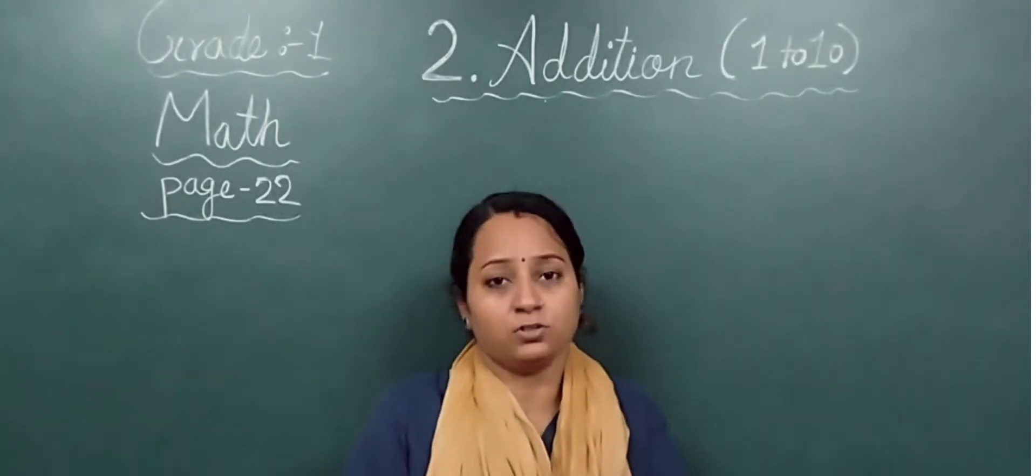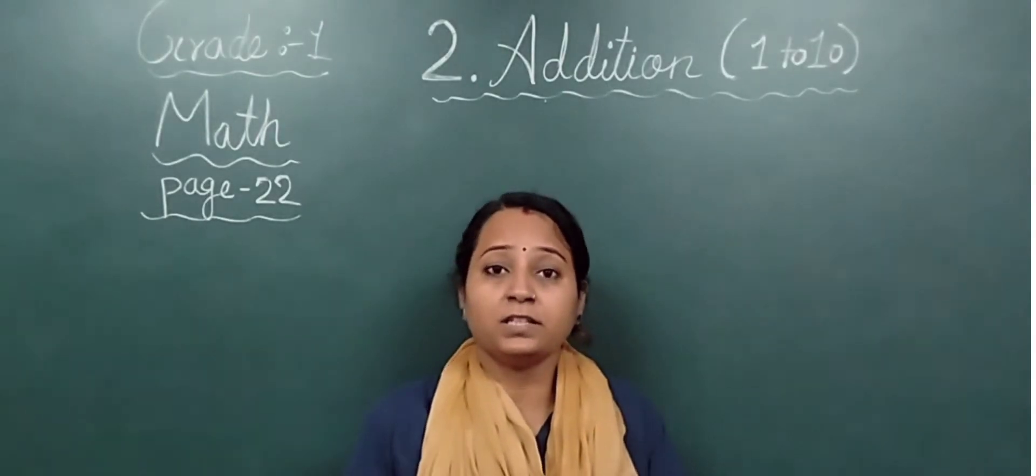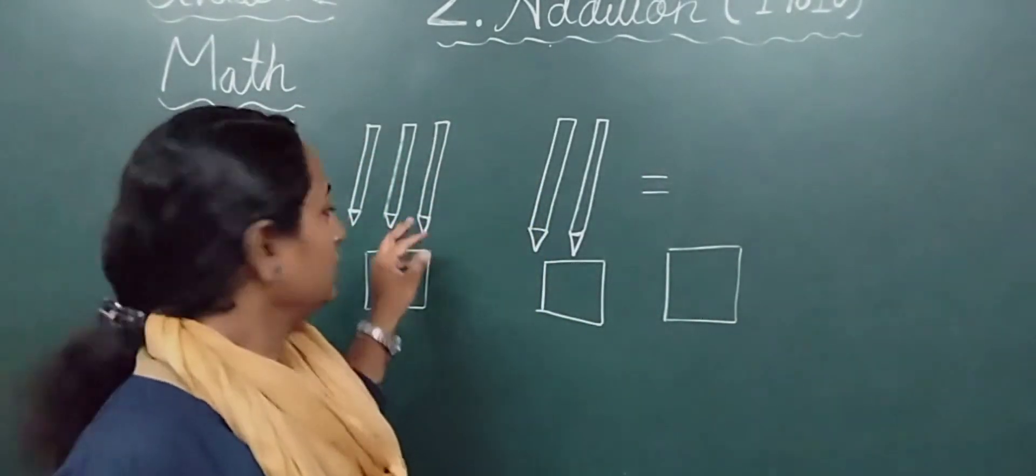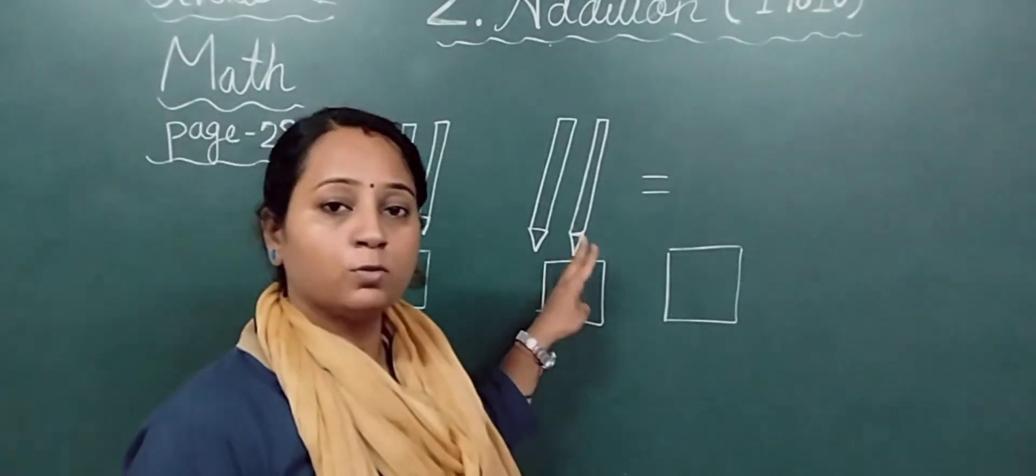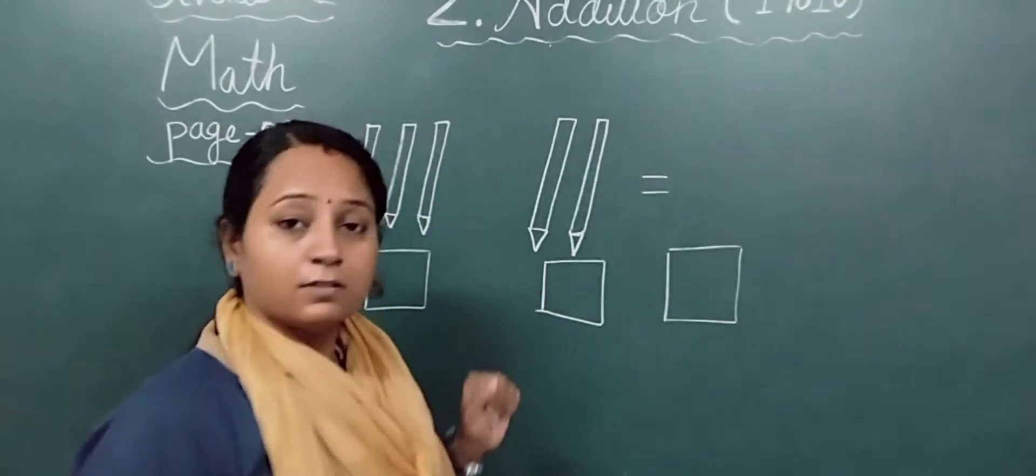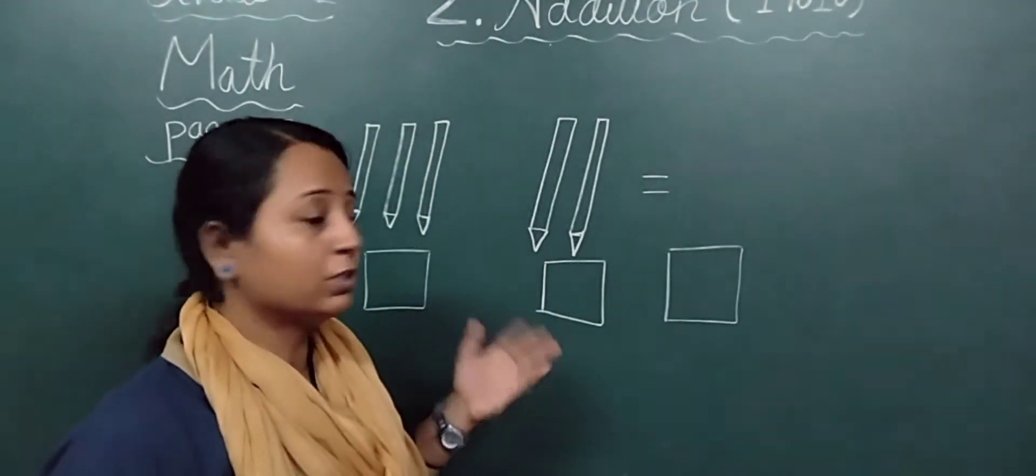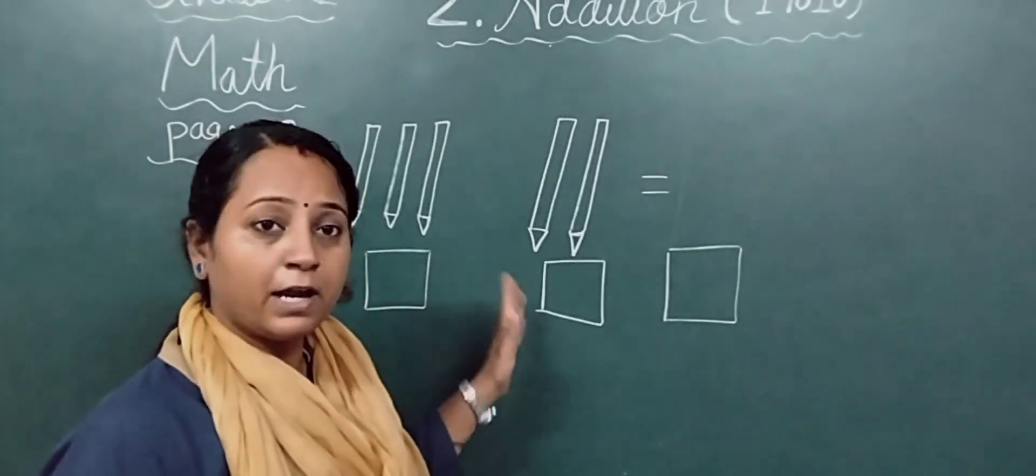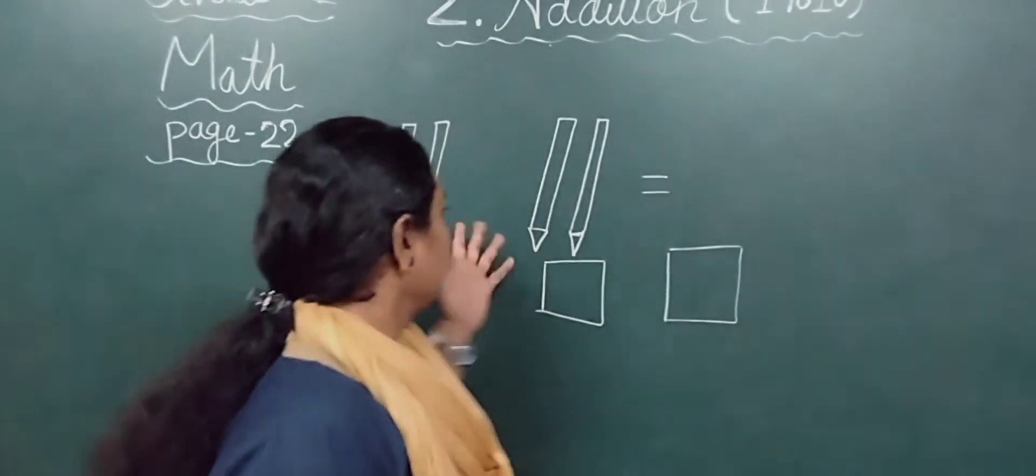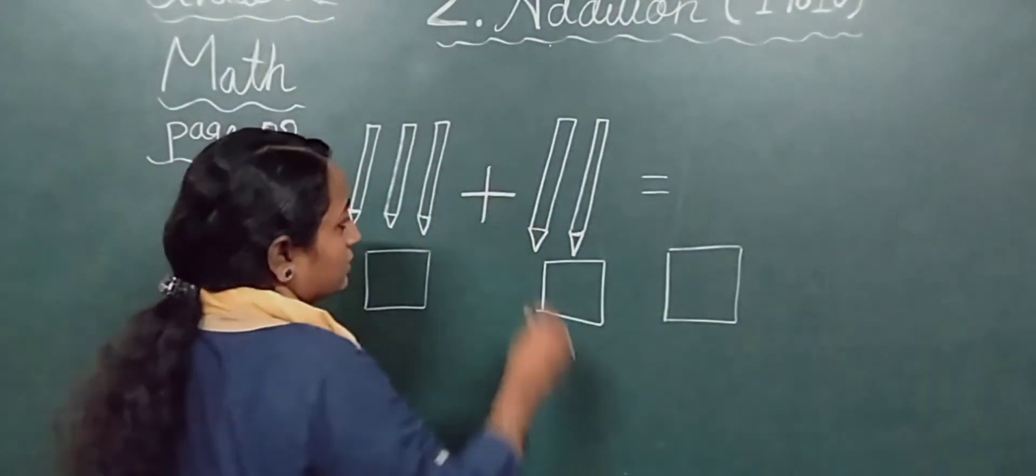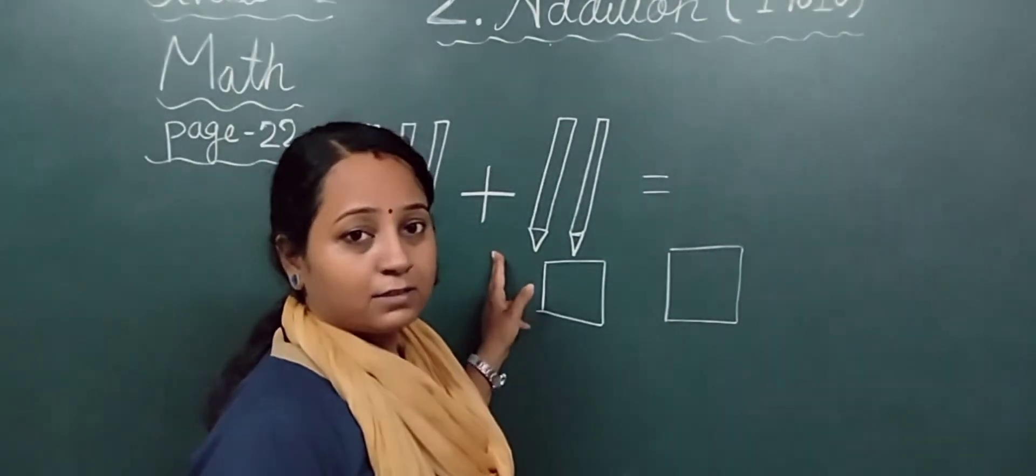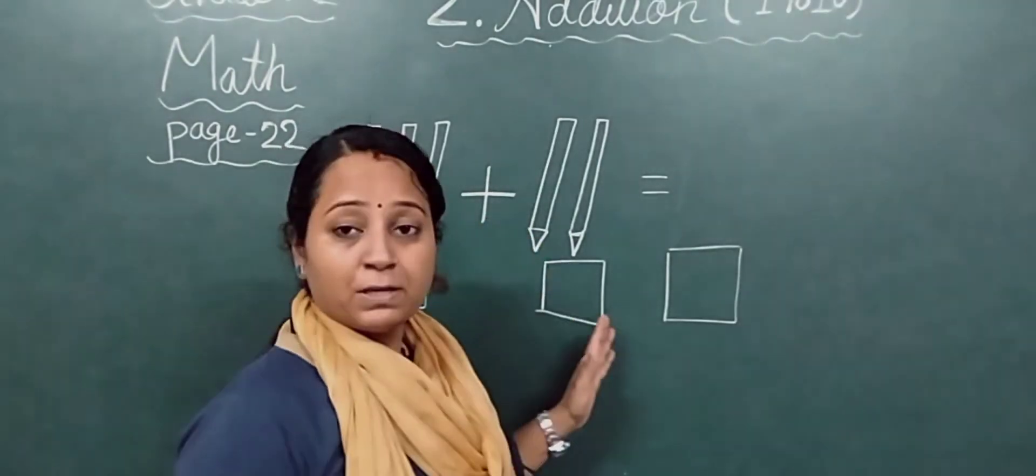Now what is the meaning of addition? Addition means something and. Now see here examples. Here I have drawn 3 pencils and here 2 pencils. What we have to do, we have to add. We have to count the total, how many total pencils are there. The addition sign is plus. This is the sign of addition, plus means add.